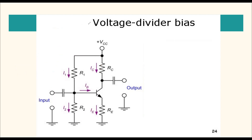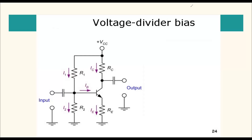This circuit is mostly widely used in linear circuits. You can see R1 and R2 — I have a voltage divider circuit used here, which is why it is known as a voltage divider biasing circuit. In an exam, if they give you a circuit diagram and ask you to identify which type of bias it is: if you find R1 and R2 in such a voltage dividing condition, then it is voltage divider bias.